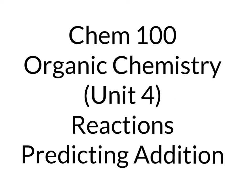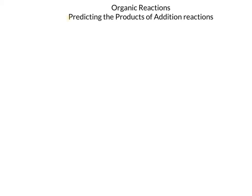This video will give a brief introduction to addition reactions that occur on alkenes and alkynes. Now let's look at how we can predict the products of addition reactions. We need to remember that the reactants will be alkenes or alkynes and that they will give us different products.